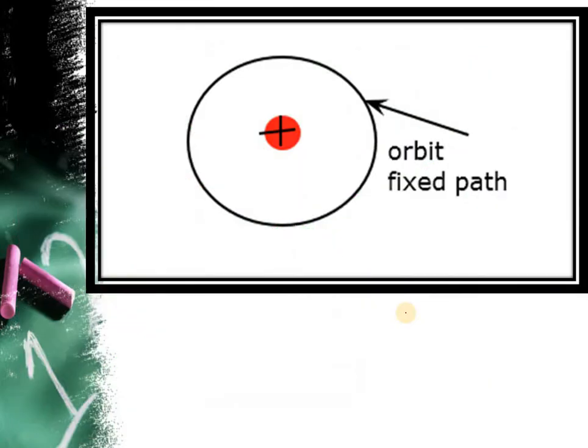Next topic is orbit. First of all, Bohr told us about the orbit. What is a fixed path around the nucleus? This is the center nucleus and this is the path around the nucleus. It was named KLMN shell and N value 1, 2, 3.